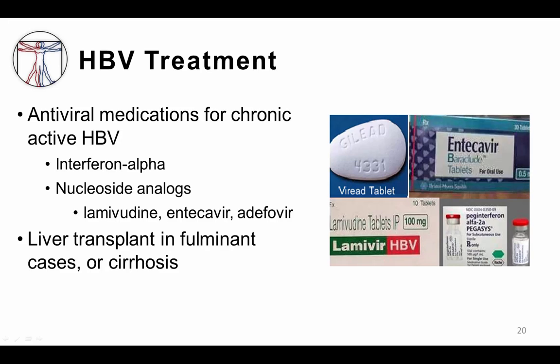In terms of treatment for hepatitis B, antiviral medications are sometimes recommended for chronic infections. Medications that have been studied include interferon alpha, as well as several nucleoside analogs including lamivudine, entecavir, and adefovir. These are usually only used in patients who have chronic active forms of hepatitis B. For patients with severe disease such as fulminant hepatitis B, or those with long-standing chronic disease who develop cirrhosis, liver transplant may be the only option for treatment.